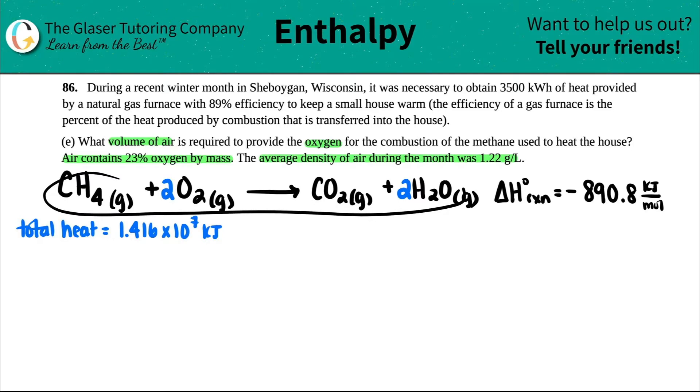There's a couple things that we did to get to where we're at. We did the balance equation, so that's done. We have the delta H value for this reaction of methane, which is CH4. And then from this 3,500 kilowatt hour with the 89% efficiency, we found out that the total heat required is 1.416 times 10 to the seventh kilojoules.